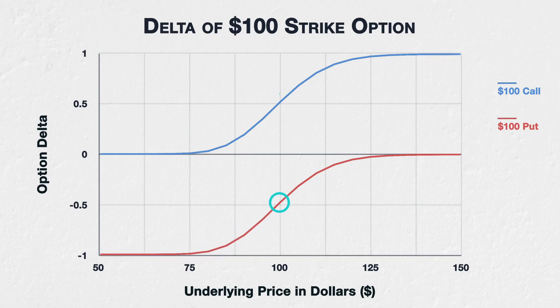Moving along the chart to the right, both the $100 call and $100 put will become at the money once the underlying price reaches $100. As we mentioned previously, this will result in deltas of approximately 0.5 and minus 0.5 respectively — though it's actually closer to 0.52 and minus 0.48 here. When very close to at the money, each option will act similarly to a half-sized position in the underlying, gaining or losing roughly $0.50 for every $1 move in the underlying.